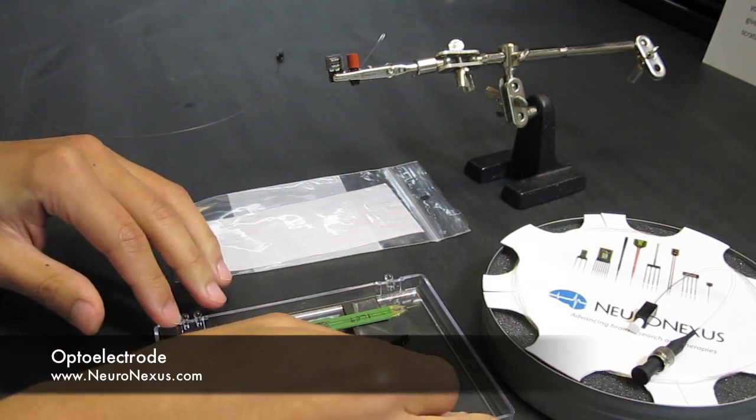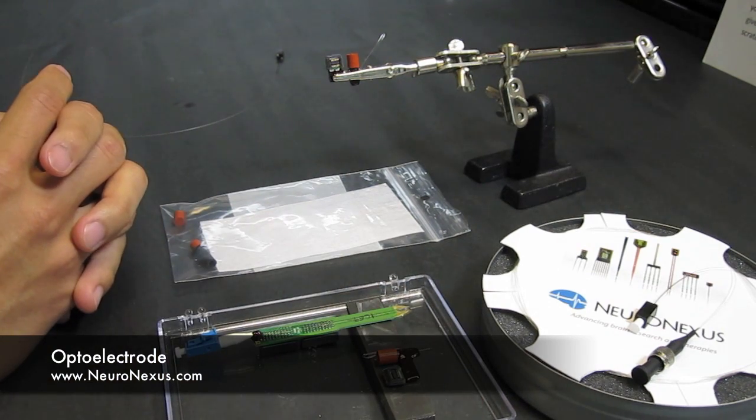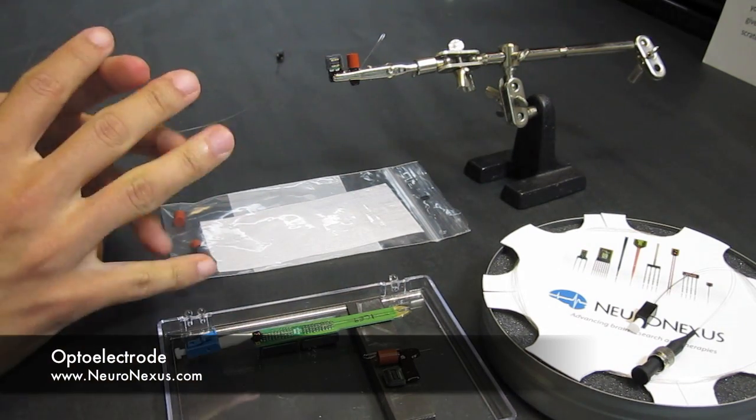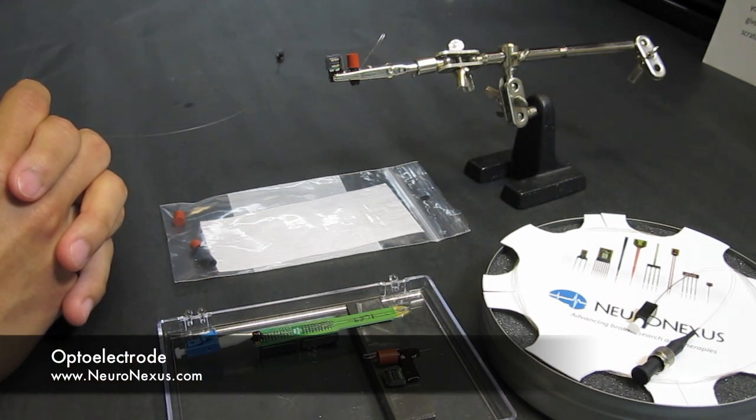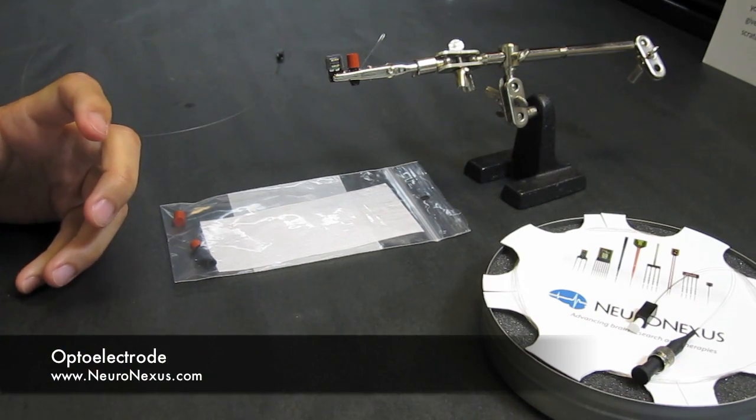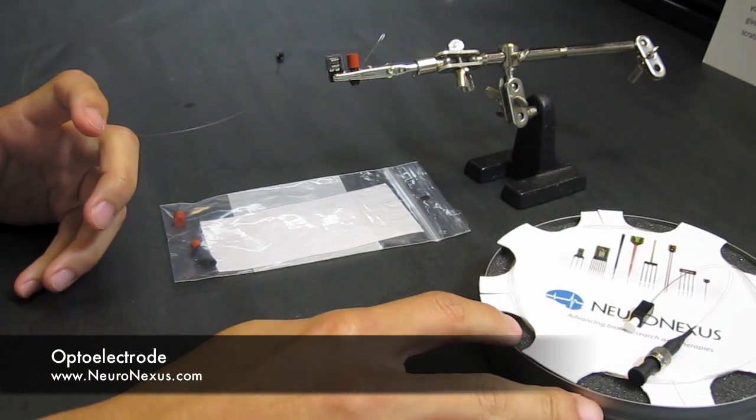The acute usually has dip pins and the chronic can have either a ZIF or an Omnetics connector. You'll need an optical patch cord to connect your light source to one of these.